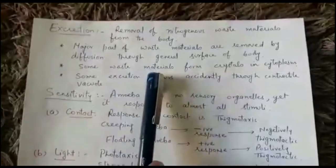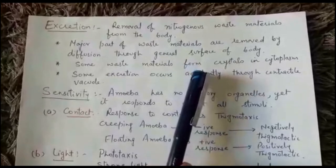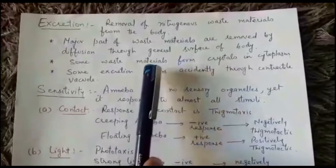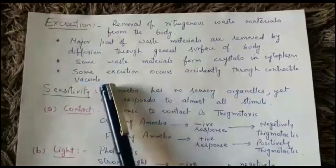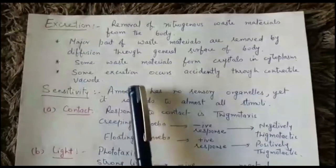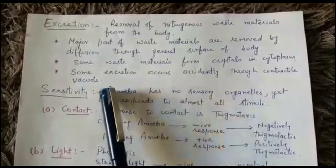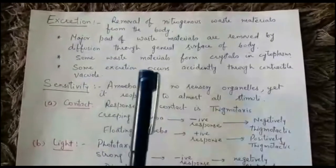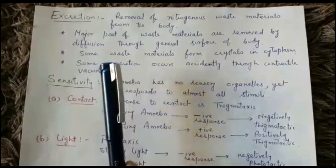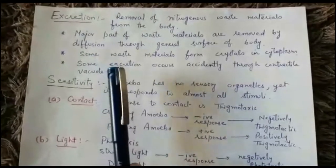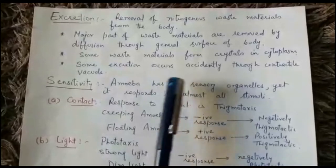Some waste materials get crystallized in the cytoplasm — we have already studied that there are crystals of waste materials present in the cytoplasm. Additionally, some excretion accidentally occurs through the contractile vacuole by the process of osmoregulation, where water and some waste materials also leave the body accidentally through the contractile vacuole.